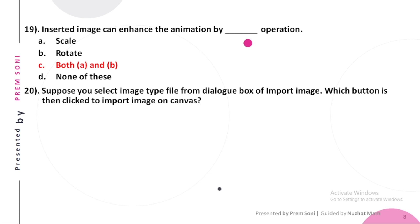Twentieth, suppose you select image type file from dialog box of import image, which button is then clicked to import image on canvas? Options are: a. Apply, b. Open, c. Insert, d. Ok. The answer is Open.